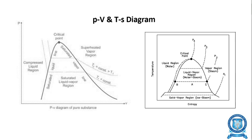The PV (pressure-volume) diagram shows a dark curve called the saturation curve or saturation line. There is a critical point on this curve. To the left of the critical point is the compressed liquid region, and to the right is the vapor region. The area under the saturation line is the saturated liquid-vapor region, where both liquid and vapor coexist. Above the saturation line is the superheated region.